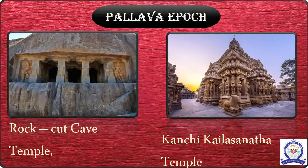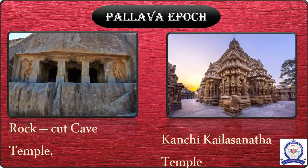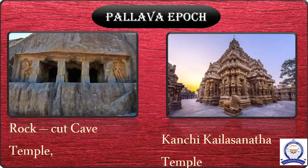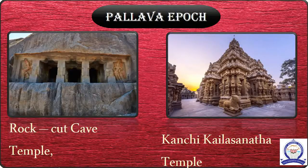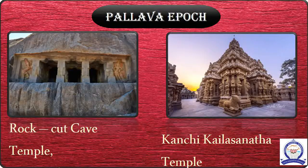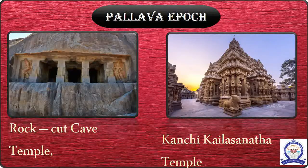Narasimha Varma 2, also known as Rajasimha, built the Kanchipuram Kailasanatha temple. The Vaikunda Perumal temple at Kanchipuram was built by Nandhi Varma 2. Mahabalipuram is built of cut stone rather than carved out of caves. It has two shrines, one dedicated to Shiva and the other to Vishnu.